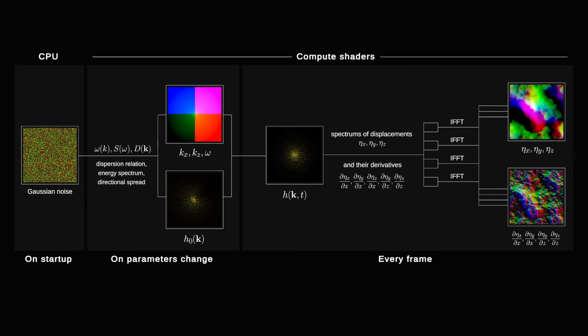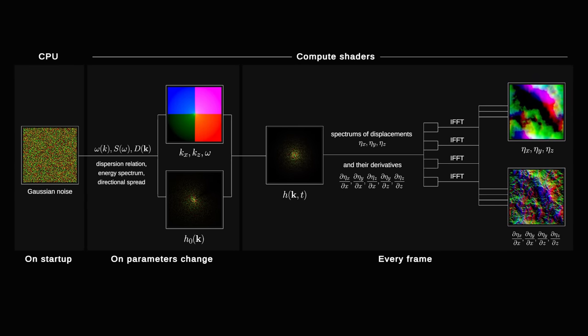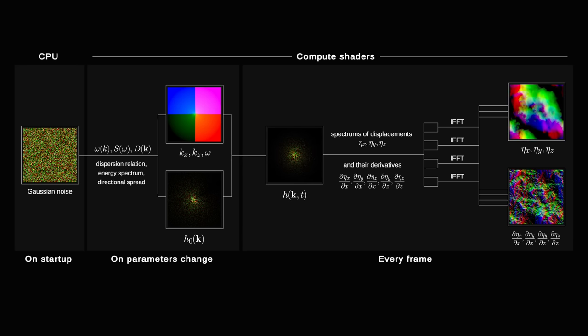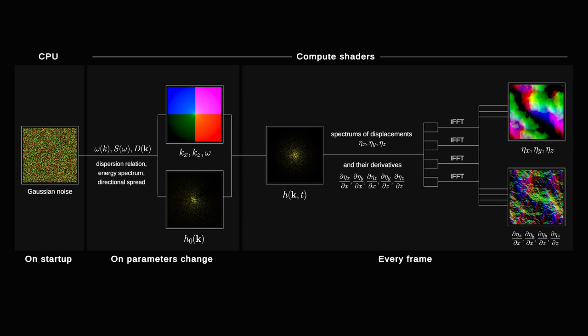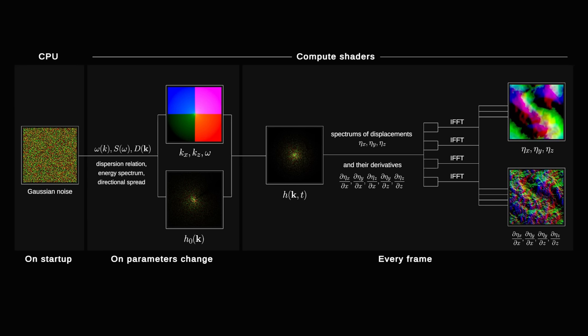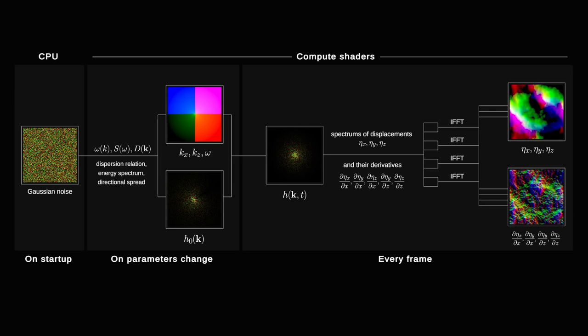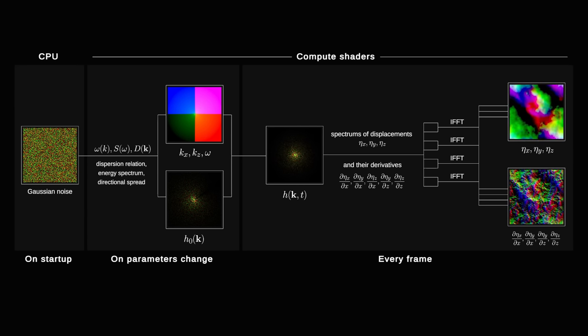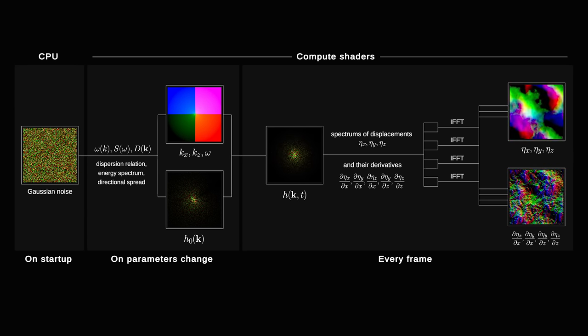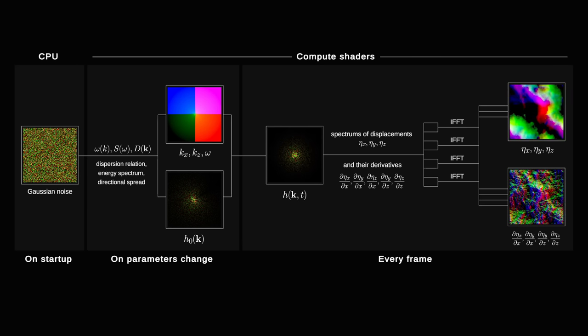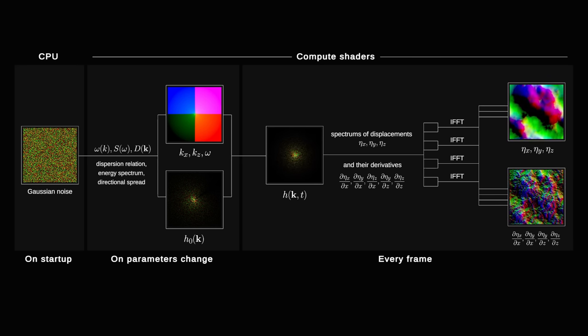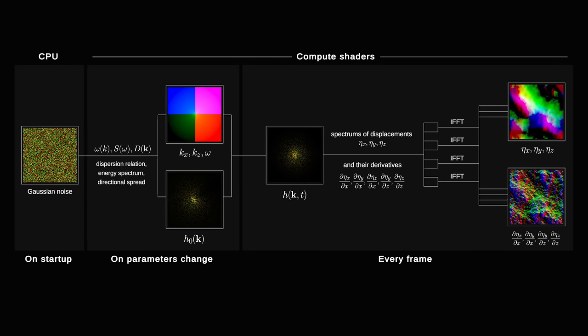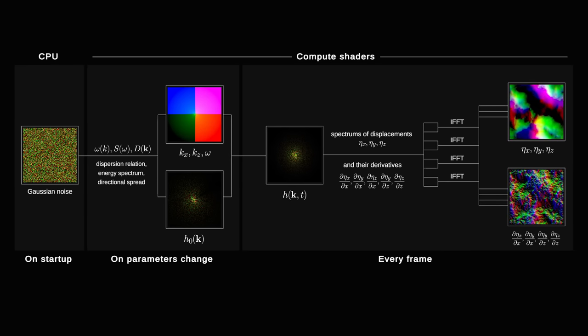We have three displacement components and two derivatives of each of them. So in total it's nine FFTs, but two of the derivatives are equal, so there's actually only eight. The results of all of them are real values. By exploiting this fact we can pack them in pairs, so instead of eight FFTs we're only doing four. Finally, we calculate the FFTs and pack the results into two textures, one for displacement and one for derivatives. We then can use these textures in a shader to displace the surface and calculate normals for lighting.